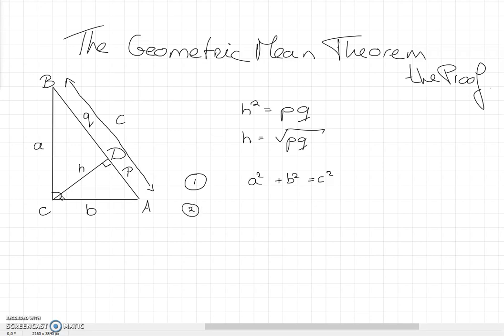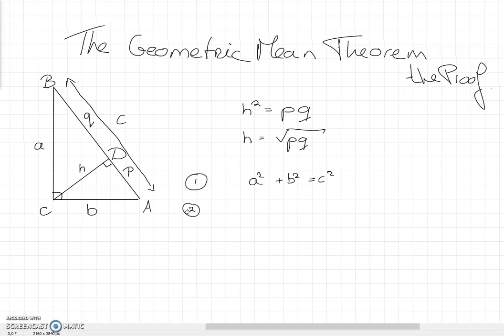Secondly, because CD is the altitude belonging to AB, both ADC and BDC are also right angled triangles. We can write down that h squared plus p squared is b squared.